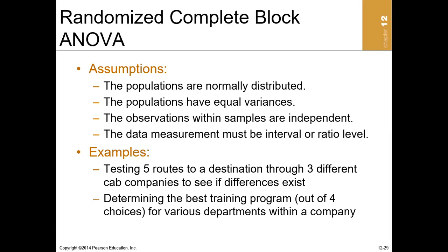The assumptions for randomized complete block ANOVA are: number one, the populations are normally distributed; number two, the populations have equal variances; number three, observations within samples are independent; and number four, the data measurement must be interval or ratio scale.